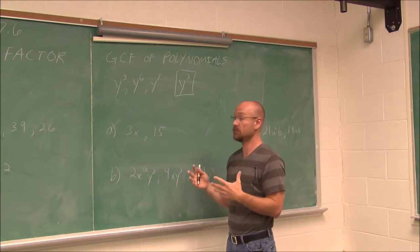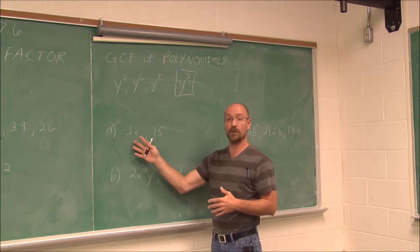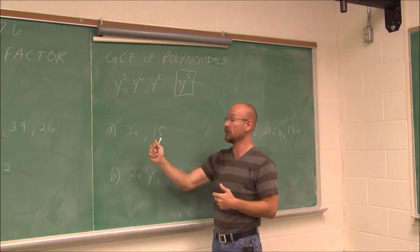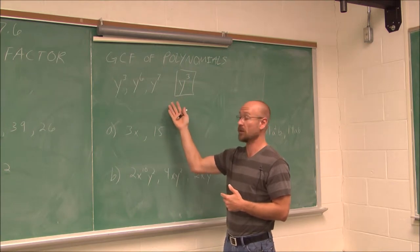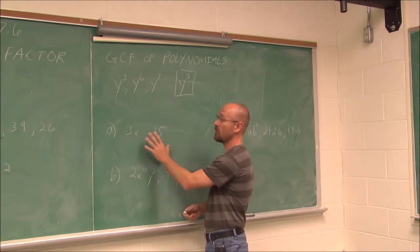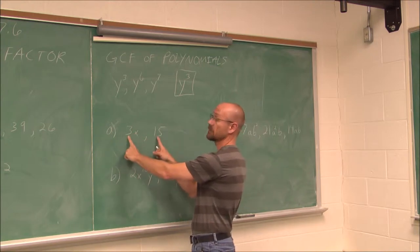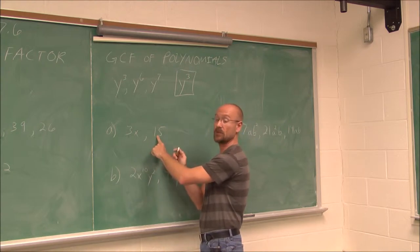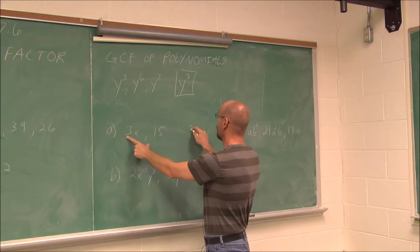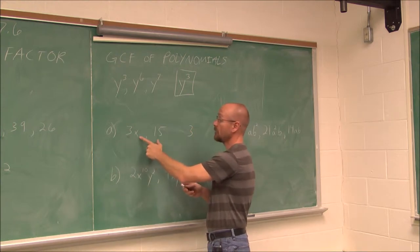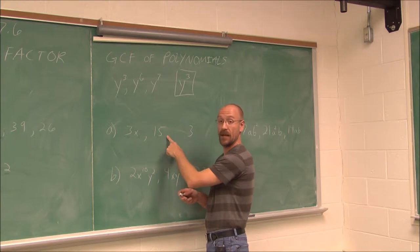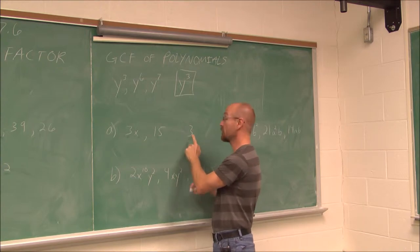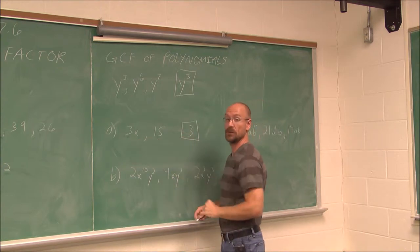Sometimes we'll have a combination of variables and numbers, and we just combine the two concepts of dealing with the number and the variables. If I look at these two expressions and want to find the greatest common factor, the first thing I do is assess the numbers. If I break 15 down, it's 5 times 3, and this is 3. So 3 is a common factor. The variable: this has an x, this doesn't have any x's, so that's not common. The only thing in common is 3 — that's the greatest common factor.